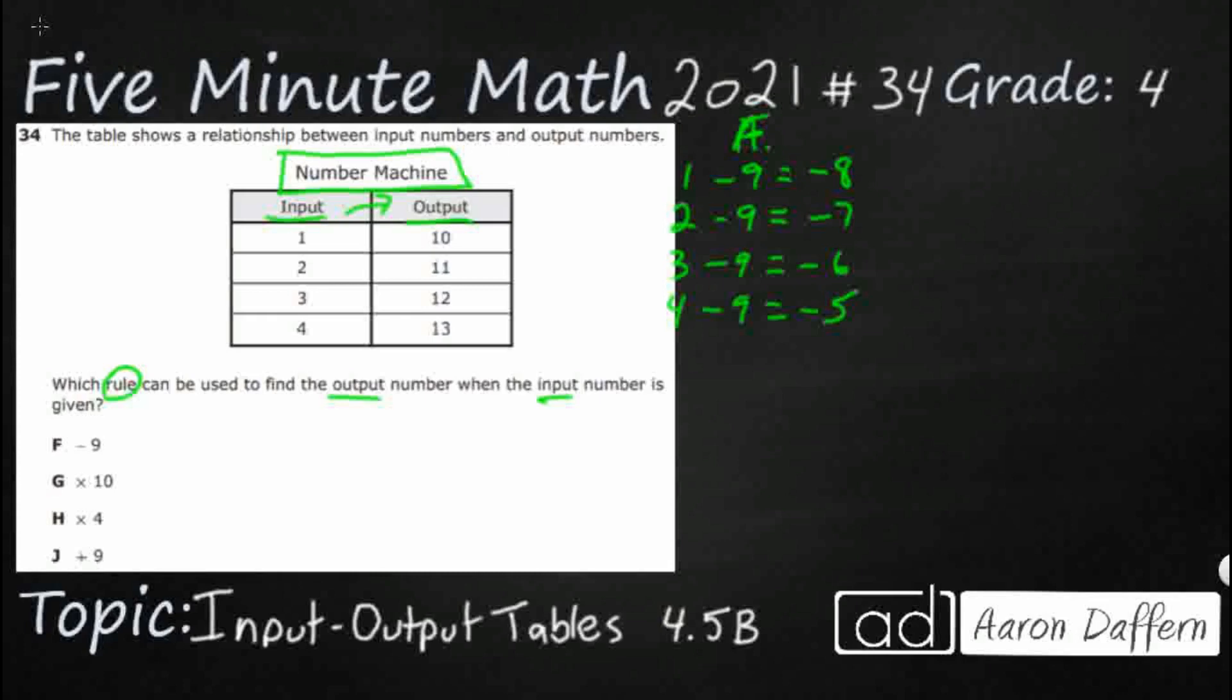Obviously, if we were to add that, we would be good. Let me tell you why they think that's a good tricky answer. Because if we did A minus 9 right here, 10 minus 9 equals 1. And 11 minus 9 does equal 2.